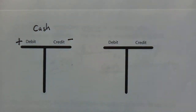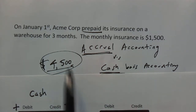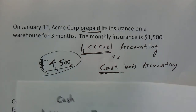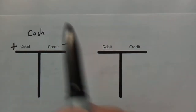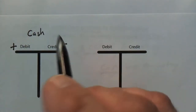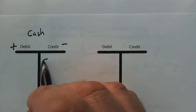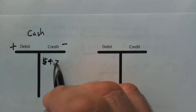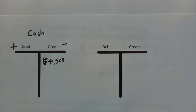Since in our scenario we wrote a check for $4,500 for our prepaid insurance on January 1st, that would mean our cash is being reduced by $4,500. So I'm going to credit cash for $4,500. Since we have double entry accounting, I need to have an equal and opposite debit for $4,500.